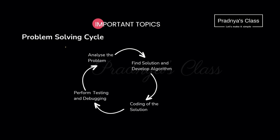Here is the problem solving cycle which we will follow to solve a particular problem. First of all, we have to try to understand the problem by analyzing it. After understanding the requirement or analyzing the problem, we need to find out the solution. You will generate the solution by writing the algorithm or by drawing the flowchart. Once we understand the steps properly, we will write the code. After writing the code, we have to make sure it is working fine by testing it — it should be without any error — so we should debug it also.